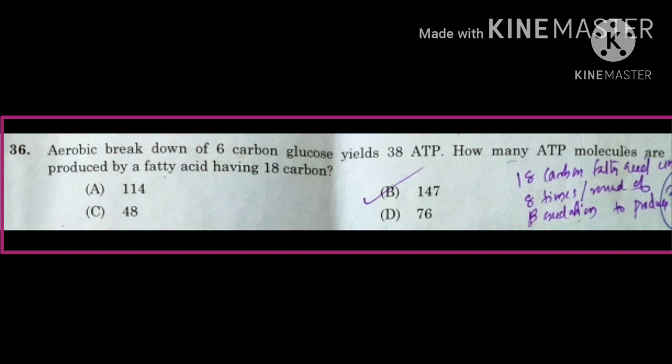This question is about the breakdown of fatty acid — how many ATP molecules are produced by a fatty acid having 18 carbons. There is no relevance for the first part of the question about aerobic breakdown of 6-carbon glucose yielding 38 ATP. That part was provided to confuse people, so we concentrate on the second part.